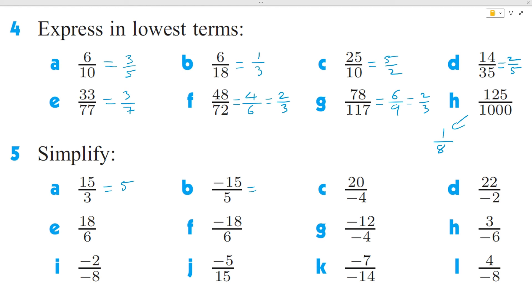Question b, 15 divided by 5 is 3. However, a negative divided by a positive is a negative. So this will be negative 3.